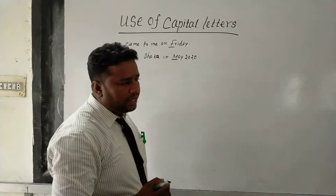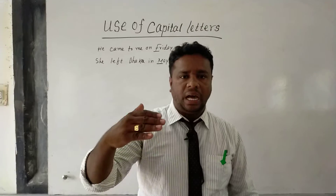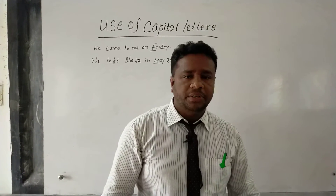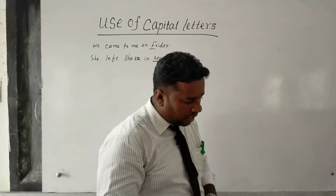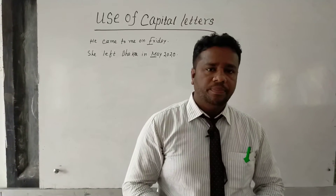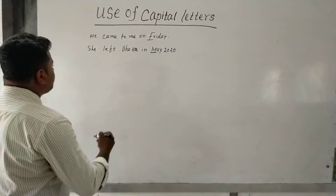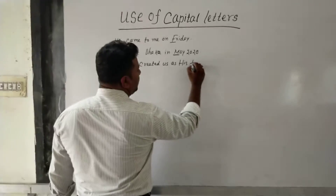Rule six: the names of the Almighty Creator and the pronouns that refer to God and Allah begin with a capital letter. For example, 'God has created us as His best creatures.'